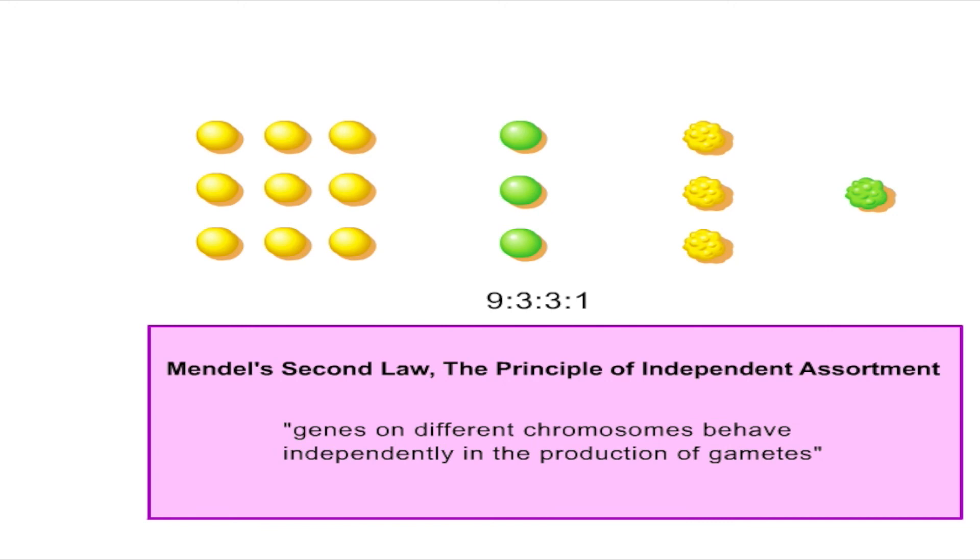From these and similar results, Mendel proposed his second law, the principle of independent assortment, which states that the factors for different traits assort independently of one another. In modern terms, this means that genes on different chromosomes behave independently in the production of gametes.